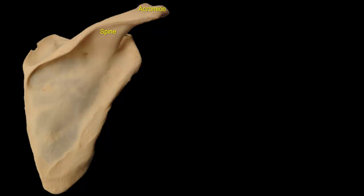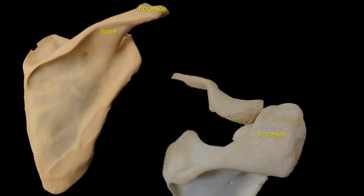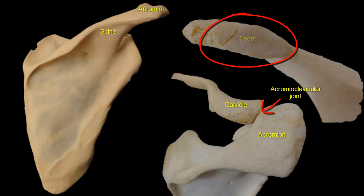Acros means point and omios means scapula, as in omohyoid. The acromion forms the subcutaneous point of the shoulder and articulates with the acromial end of the clavicle at the acromioclavicular joint. Here is the smooth facet of articulation on the medial surface of the acromion.